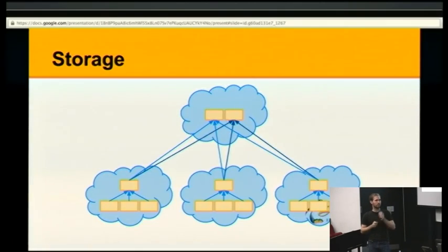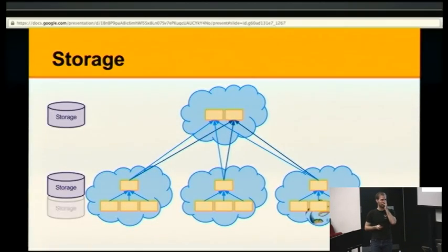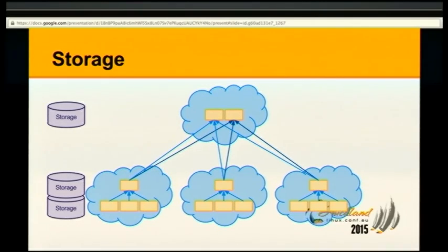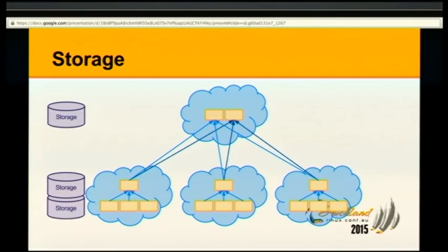What about storage? Storage can happen at all levels — you can have the global CollectD store all metrics in one place, or go the entirely different way and have all the clients store the data individually, or do something in between and store data at a local intermediate level. You can also store some information at the local level and only selected important information at the global level — there's a filtering language built into CollectD to do this.